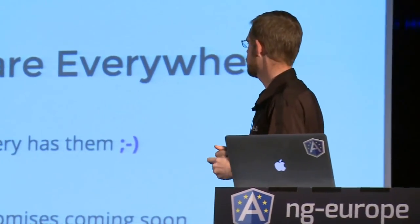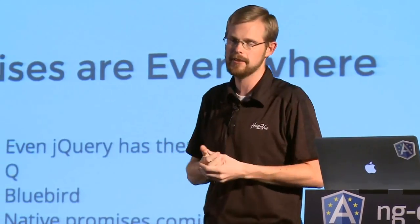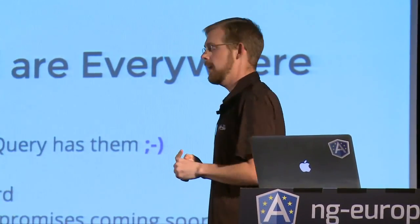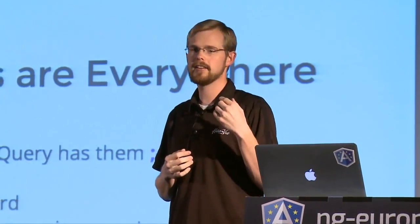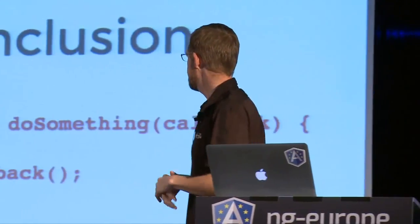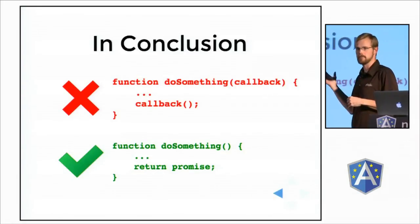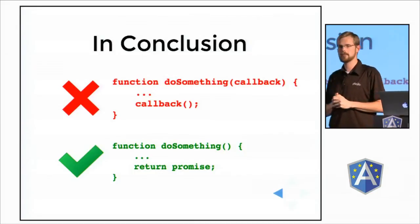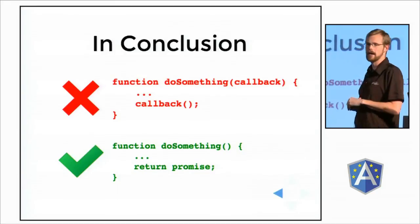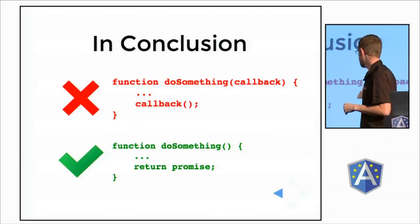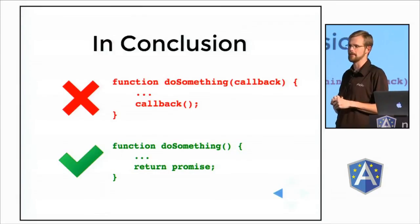A couple of other cool things you can look into is the Bluebird project — a pretty cool library that does really slick stuff with promises. And browsers are providing native promises very soon. In fact, Angular's 1.3 queue service has an API that is semantically equivalent to the browser native interface. In the end, if you have asynchronous operations and functions wrapping those operations, don't pass callbacks to them — return promises instead. It's functional and you will be happy. Thank you very much.